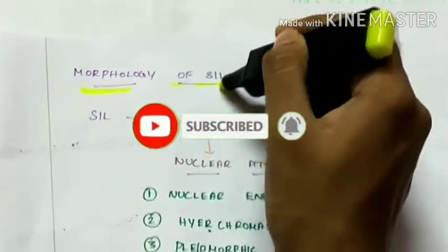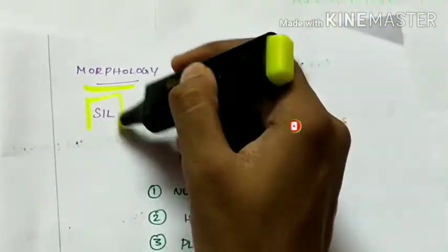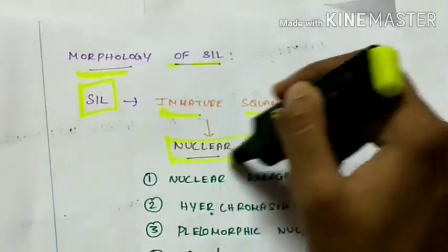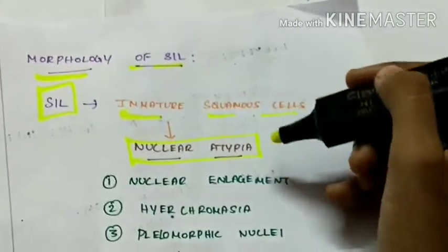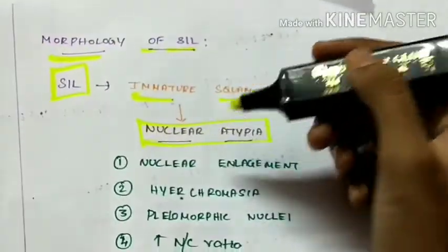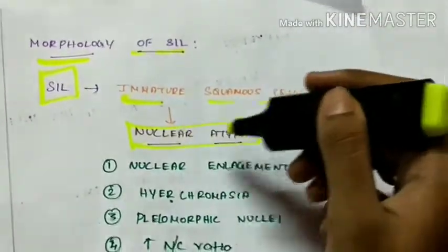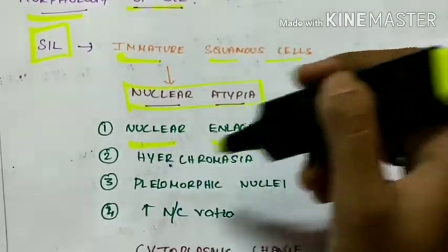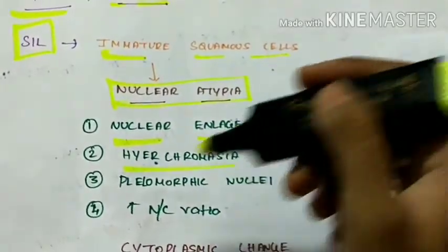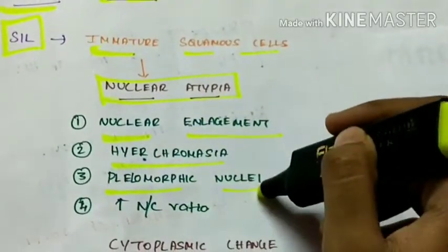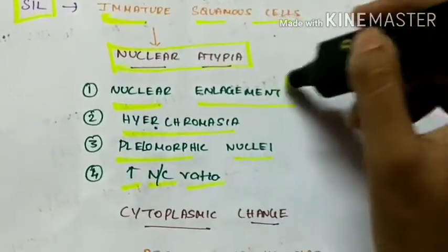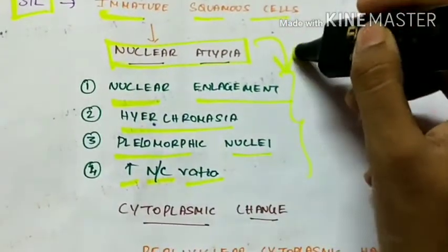The morphology of SIL. The SIL affects the immature squamous cells and leading to nuclear atypia. So there will be atypical nuclei. So the nuclear atypia is nuclear enlargement, hyperchromatia, pleomorphic nuclei and there is increased nucleocytoplasmic ratio. All these constitute the nuclear atypia.